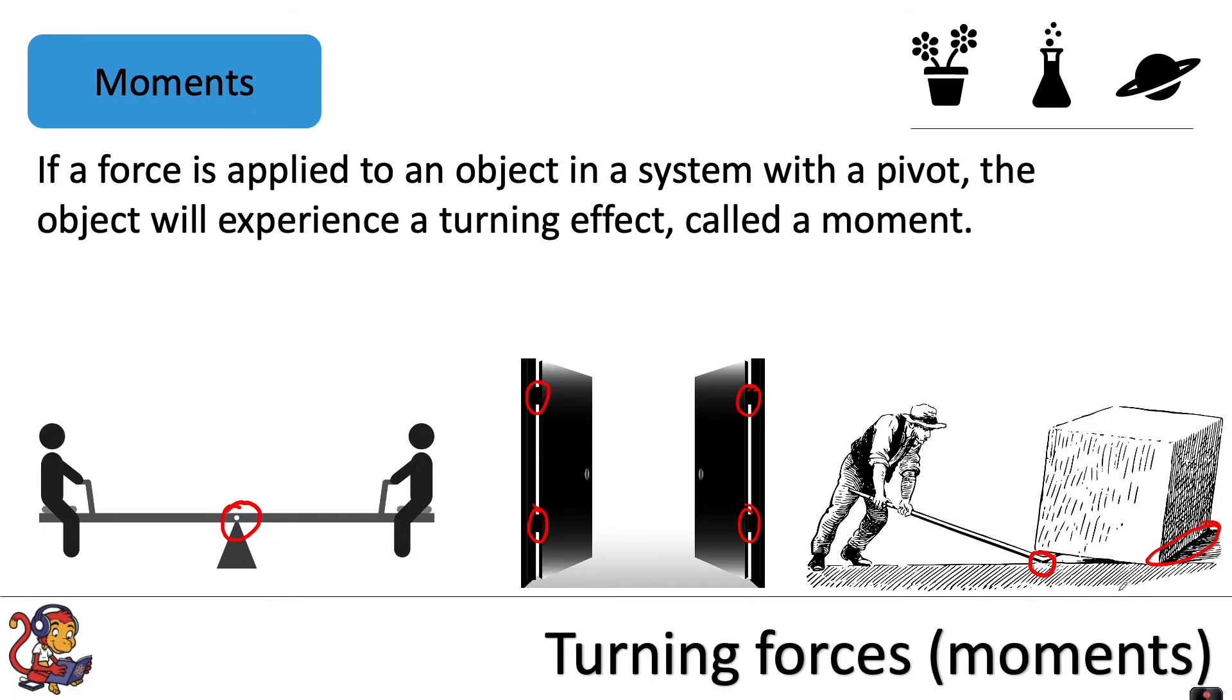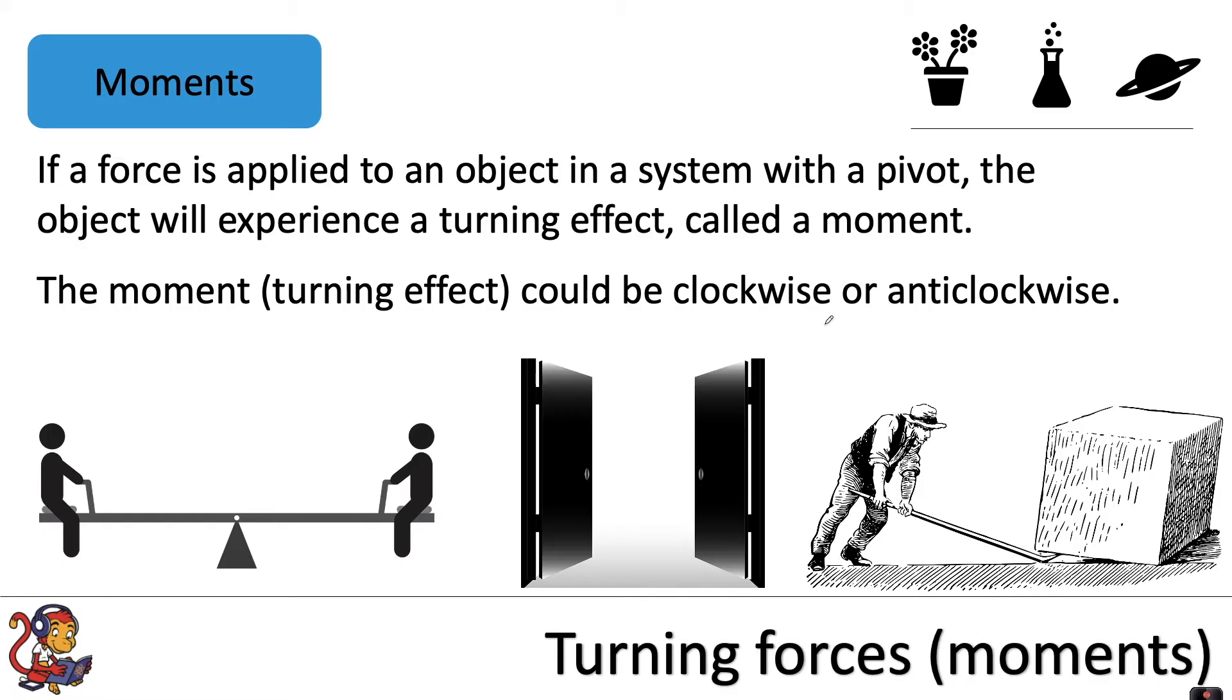If there is a pivot in the system and you're applying a force to an object, it will experience a turning effect called a moment. The moment could be clockwise in this direction, or anti-clockwise, which would be in the opposite direction.